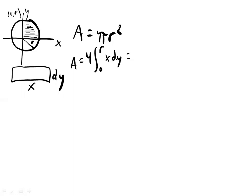And so now we need x in terms of y. And so we know the formula for a circle is x squared plus y squared equals r squared. And so we're solving for x. That gets you x is the square root of r squared minus y squared.